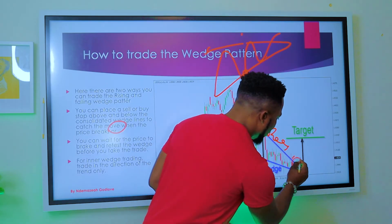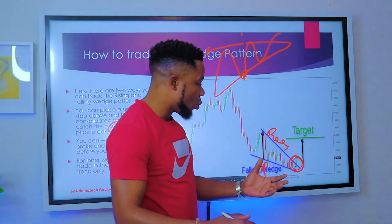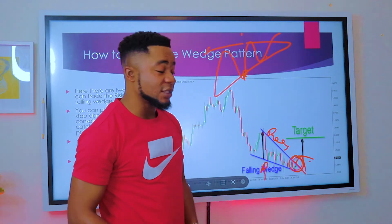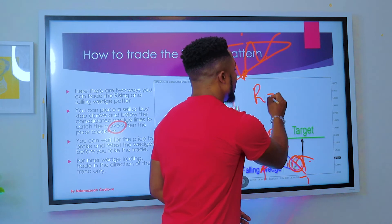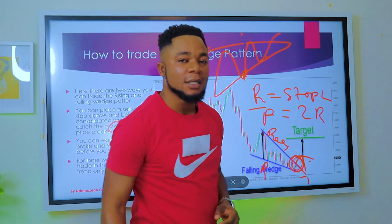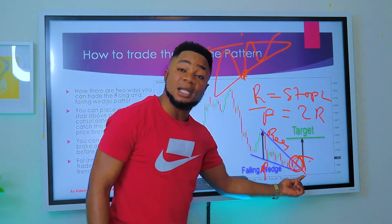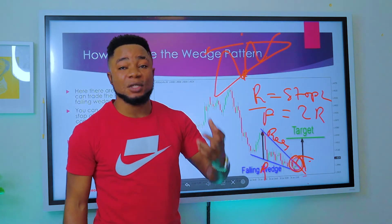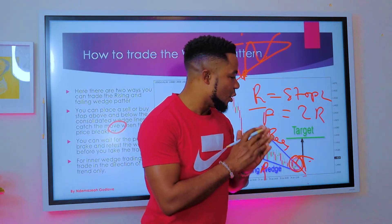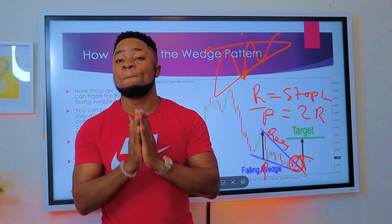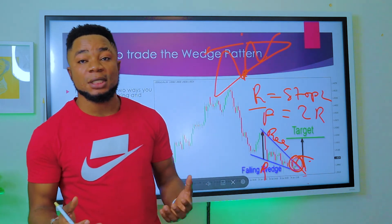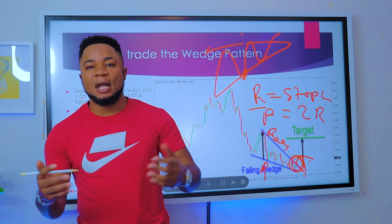When the wedge structure is broken, wait for the market to come back and retest that particular level, then buy after that retest. Your stop loss goes below the retest level, and your take profit should be double your stop loss — at least a 1:2 risk-to-reward ratio. For example, if your stop loss is 20 pips, put your take profit at 40 pips. Never take a trade that doesn't give you a risk-to-reward of at least 1:2. That is how you trade this structure in the forex market.